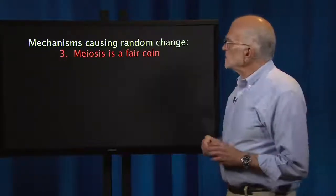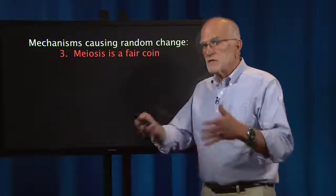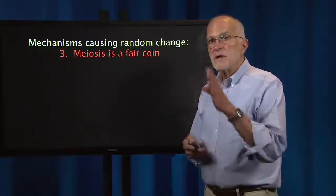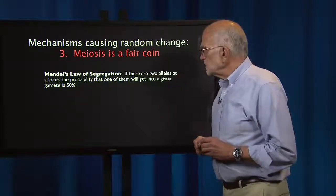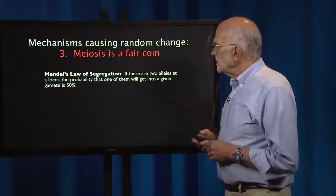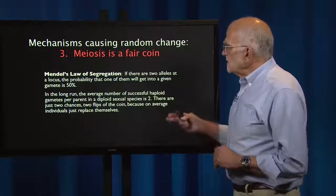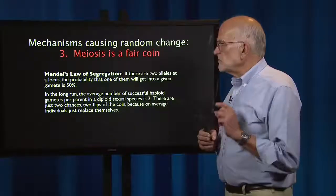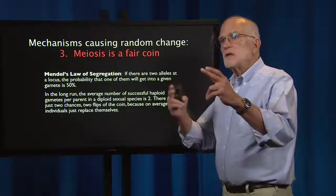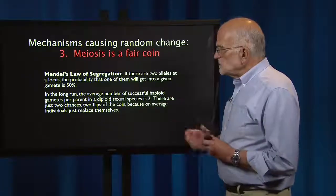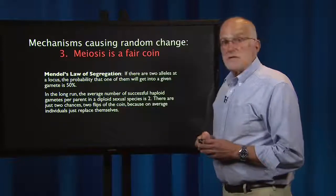The third mechanism causing random change is that meiosis is a fair coin — probably the result of evolution designing meiosis to be absolutely fair about which allele enters which gamete. This is expressed in Mendel's Law of Segregation: if there are two alleles at a locus, the probability that one will get into a given gamete is exactly 50%. In the long run, the average number of successful haploid gametes per parent in a diploid sexual species is two, since populations are stable and organisms are just replacing themselves.